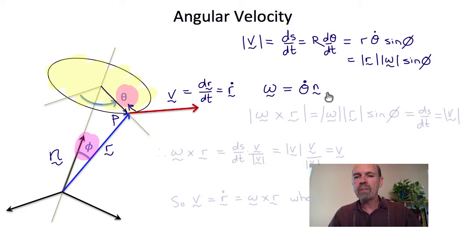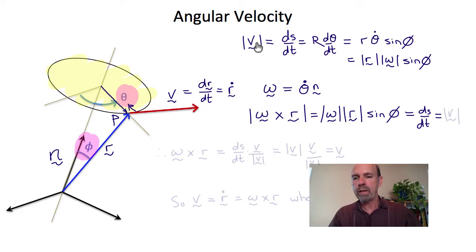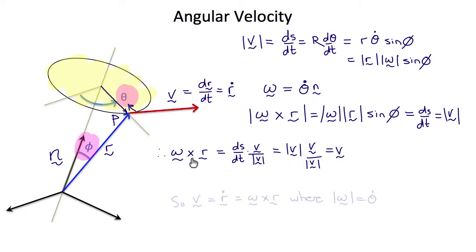The angular velocity vector has magnitude θ-dot and direction n. Now if we make the construction omega cross r and take its magnitude, its magnitude would be the magnitude of omega times the magnitude of r times the sine of φ, which is ds/dt, which is the magnitude of v, as we found above. Therefore, given that v is perpendicular to the plane of omega and r, we can write that omega cross r equals ds/dt times the unit vector v divided by the magnitude of v. But ds/dt is the magnitude of v, so therefore omega cross r equals v.